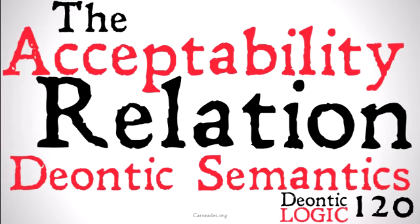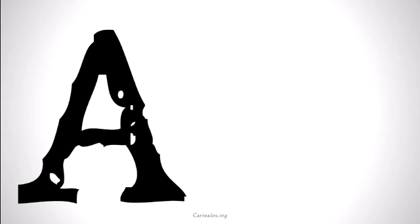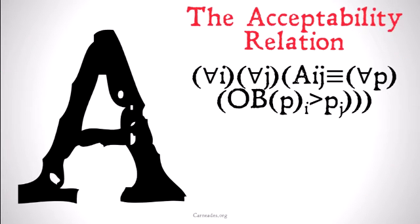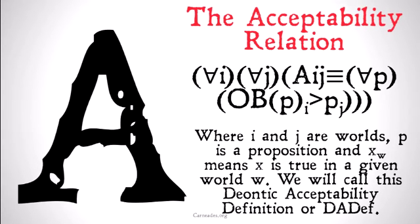We're going to be using the acceptability relation to do so. The acceptability relation is defined as follows: for all worlds I and all worlds J — these are possible worlds — J is acceptable to I if and only if, for all propositions P, if P is obligatory in I, that implies that P is the case in J. Basically, J is a world where all of the obligations of I are fulfilled, and that means J is acceptable to I. Where I and J are worlds, P is a proposition, and XW means that X is true in a given world.